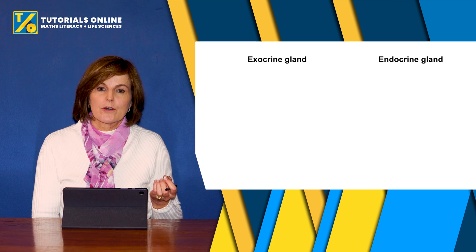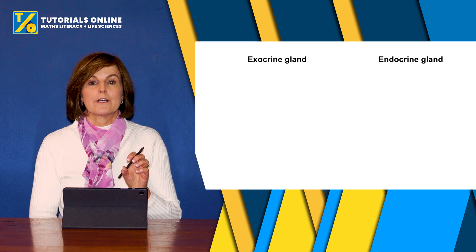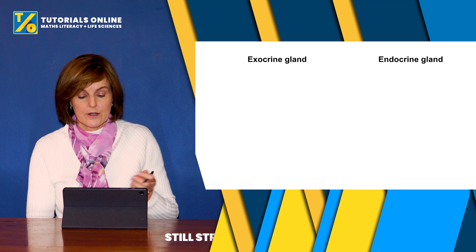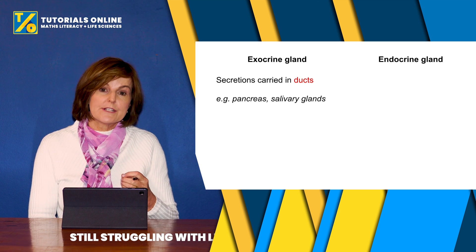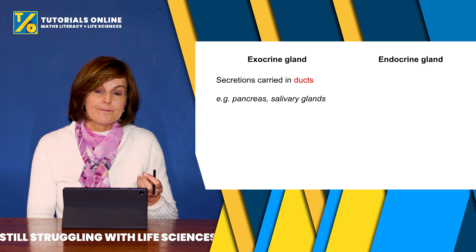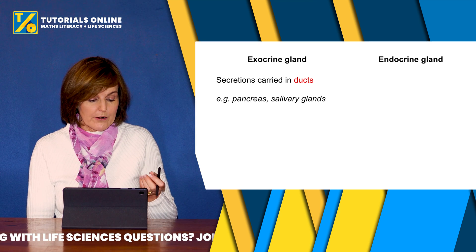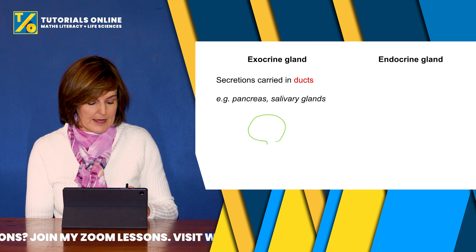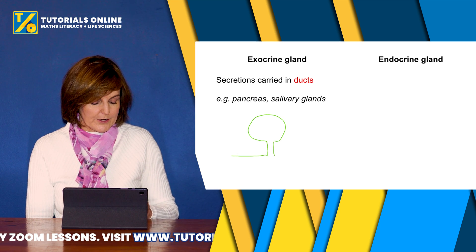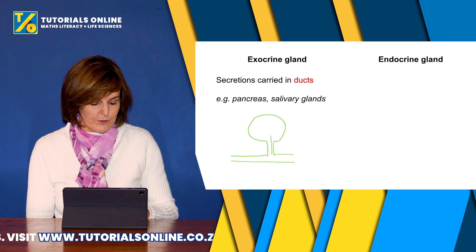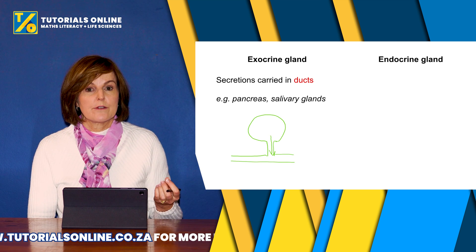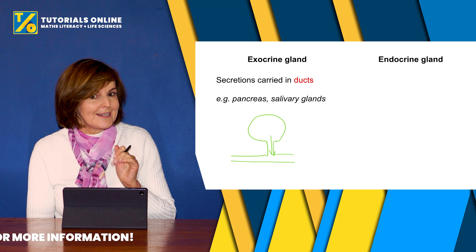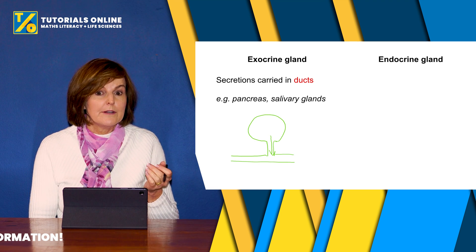If we look at the difference between an exocrine and an endocrine gland, it all comes down to the ducts — does it have ducts or not? The exocrine gland's secretions are carried in the ducts. An example of an exocrine gland is the pancreas and the salivary gland. The pancreas has a pancreatic duct that goes to the duodenum, so the hormone goes through the duct. That's why the pancreas is classified as an exocrine gland — though just as a secret, it's also an endocrine gland, so it's both.